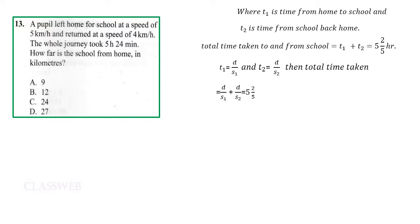The total time taken is therefore distance over speed 1 plus distance over speed 2, which should equal five and two-fifths. We substitute s1 and s2 since both speeds are given, so we have distance over 5 plus distance over 4 equals five and two-fifths.